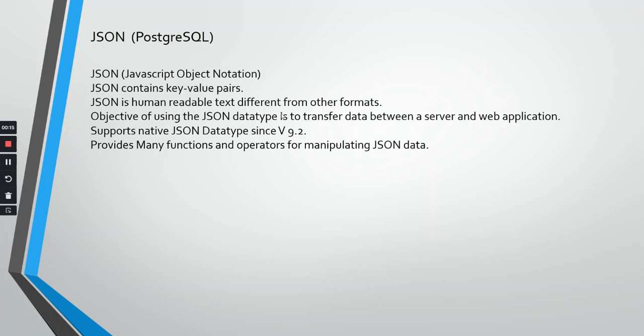Let us understand the very basics of what is JSON. JSON is a JavaScript Object Notation. It contains key-value pairs — a JSON string always contains key-value pairs. JSON is a human-readable text, different from any other formats. The objective of using JSON is to transfer data between a server and a web application.